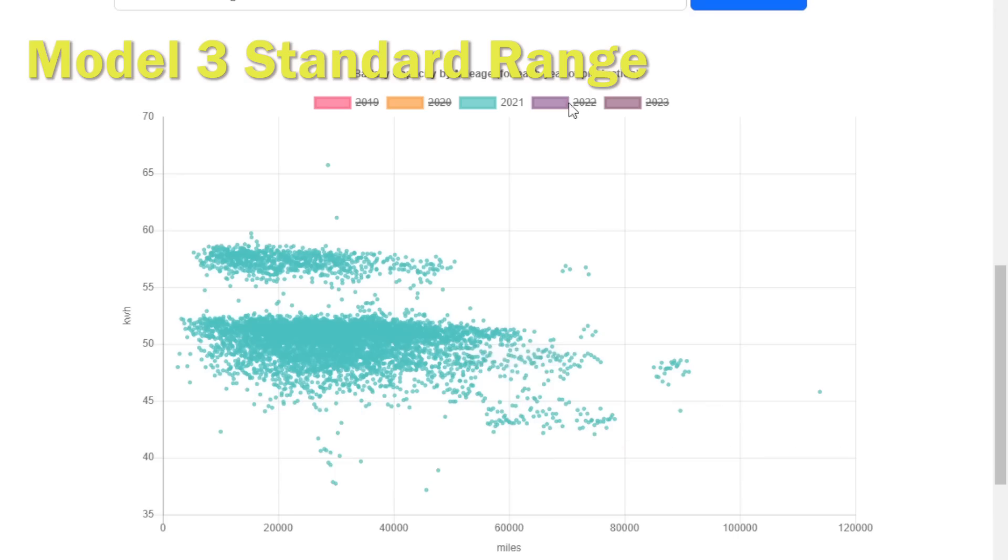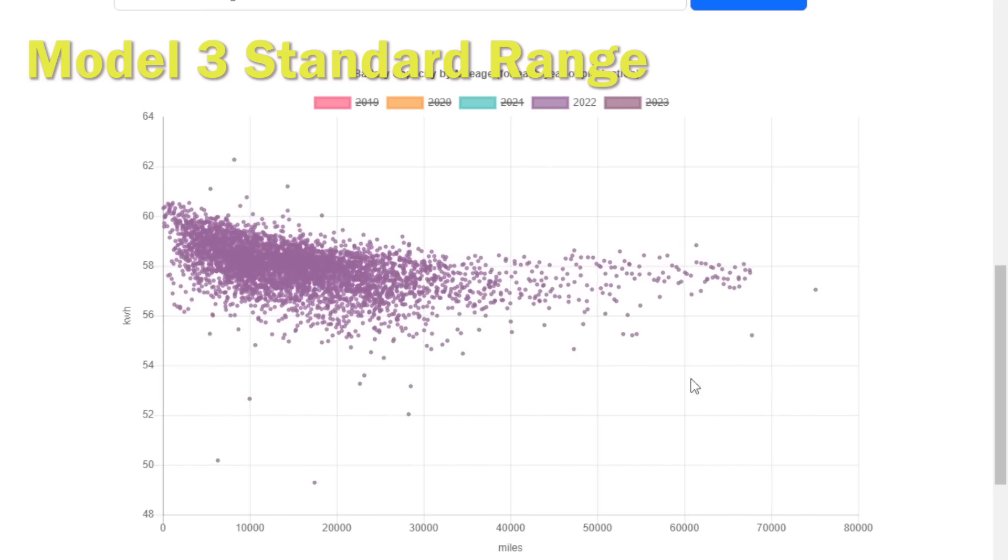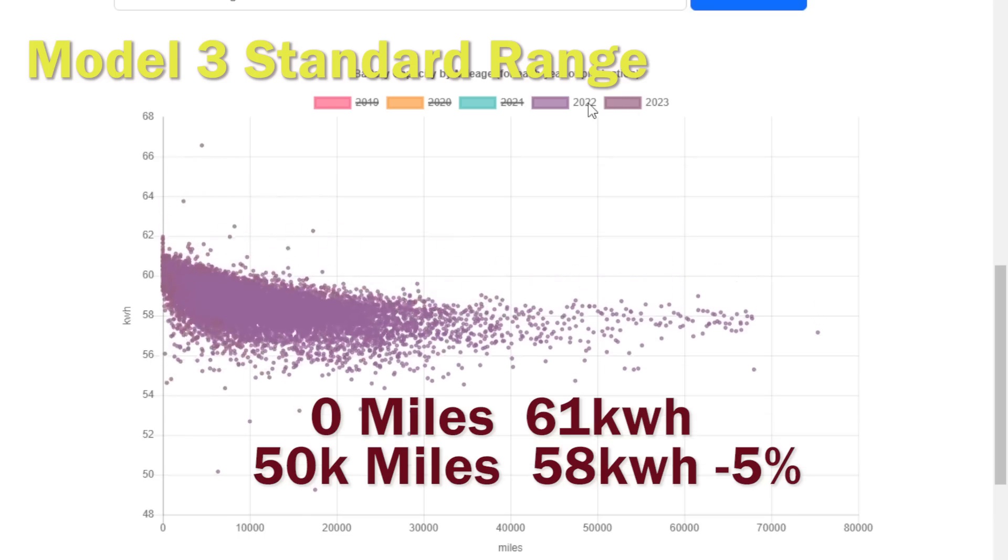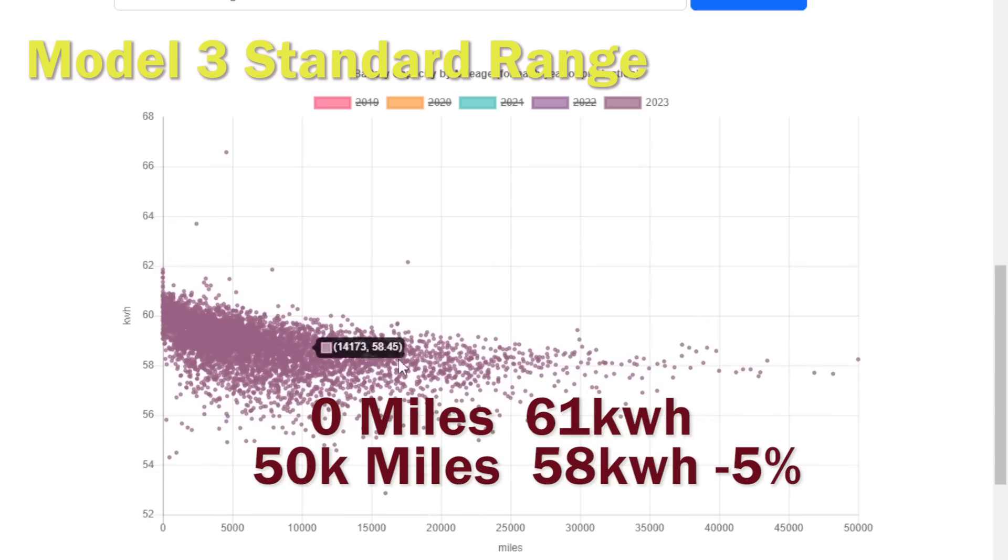So what we'll do now is we'll switch to 2022 and we'll take a look at what that data looks like and it's pretty good. It tends to start around 60-61, it does drop about 5 percent to 58 kilowatt hours by 50,000 miles. We haven't got any data at 100,000 miles, and even if we look at the 2023 batteries, so these cars have been worked pretty hard, again it's looking like it's losing about 5 percent initially and then it seems to pretty much plateau at that sort of level going forwards.